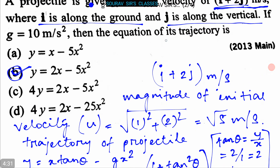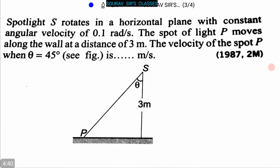Our next question is: a spotlight S rotates in a horizontal plane with a constant angular velocity of 0.1 radians per second. The spot of light P moves along a wall at a distance of 3 meters. We have to find the velocity of spot P when θ equals 45 degrees. A figure is given for this problem.